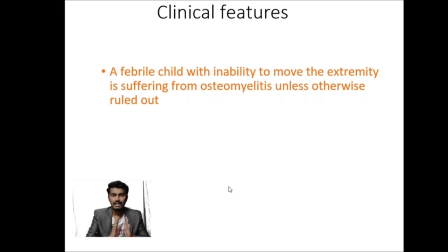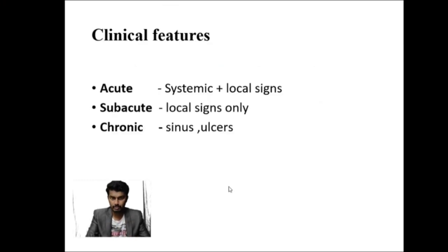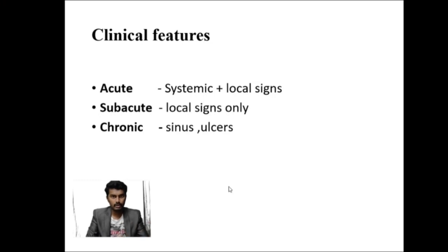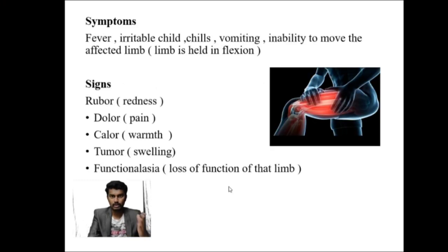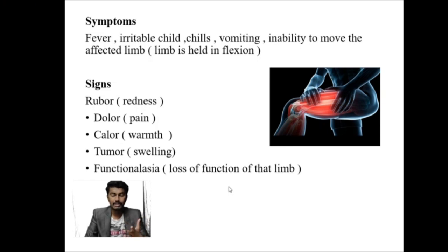For clinical features, remember the dictum: whenever a febrile child presents with inability to move a limb, osteomyelitis must be ruled out. In acute osteomyelitis, both systemic and local features are present; in subacute, only local features; in chronic, sinuses or ulcers are hallmarks. The six local signs are: rubor (redness due to vasodilation), dolor (pain), calor (warmth), tumor (swelling), and functio laesa (loss of function).